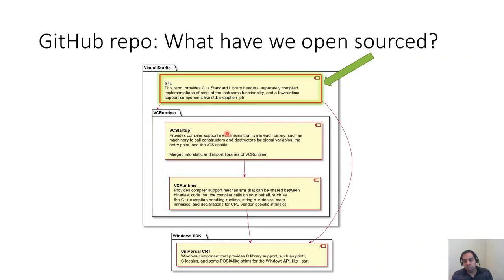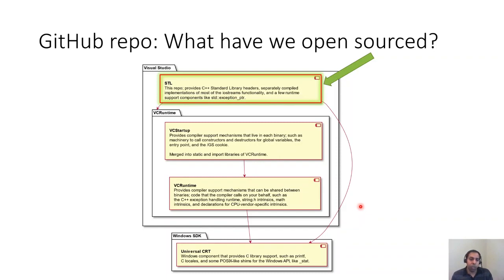The UCRT, Universal CRT, is part of the operating system. It provides C library support including functions such as printf, memory allocation, and so forth. It also serves as a shim on top of other Win32 APIs such as those used for fopen and other CRT functions. The STL is made of headers, libraries, and when built, the binaries making the C++ standard library. At this time, only the STL is open source; however, we are hoping to open source additional libraries in the future, but we don't have any current plans yet.